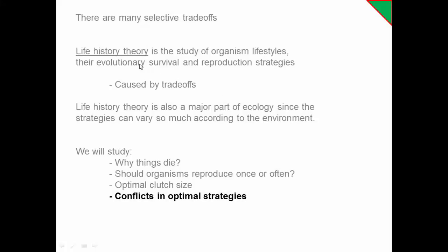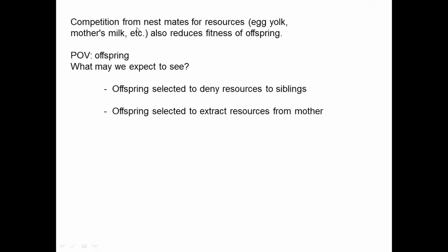Continuing our discussion of life history theory, let's look at our final topic, which is conflicts between individuals in optimal strategies. Where we last left in the previous video, we were thinking about competition between nest mates or siblings for resources.